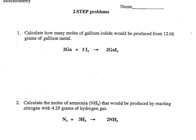When doing any of these problems, I like to highlight what it is that I have and what it is that I need to get to, and make myself a little note of what I'm starting with. So I'm starting with 12.66 grams of gallium and I need to get to moles of gallium iodide. The first thing I should note is I'm starting with a material A and I need to get to a different material B.